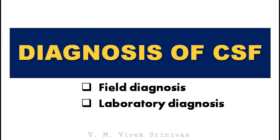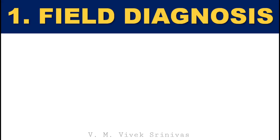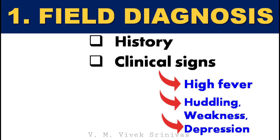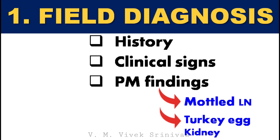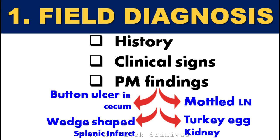Diagnosis can be done at field level or in laboratories. Field diagnosis is based on history, clinical signs such as high fever, huddling, weakness, depression, conjunctivitis, skin hemorrhages, cyanosis, and diarrhea, and by postmortem findings such as mottled lymph nodes, turkey egg appearance of the kidney, button ulcers in the cecum, and wedge-shaped splenic infarcts.